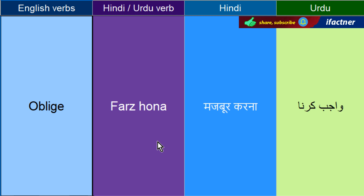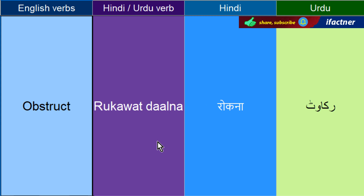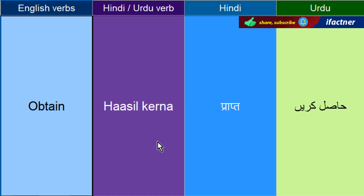Farz hoona — Oblige. Waajib kerna, waajib hoona. Mushahida kerne ko kehengay — Observe. Rukawet daalne ko keha jaata hai — Obstruct. Haasil kerna — Obtain. He obtained good marks in metric — ke usnay metric mein achhay marks haasil kiay.